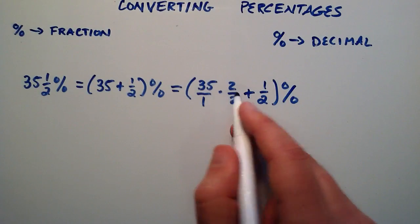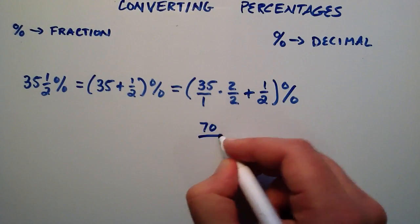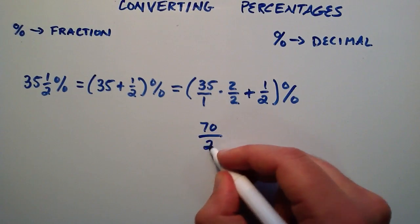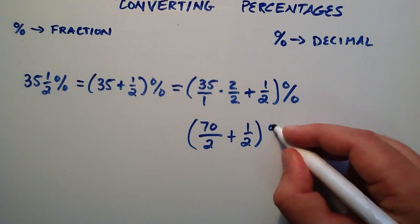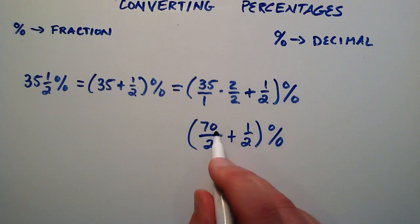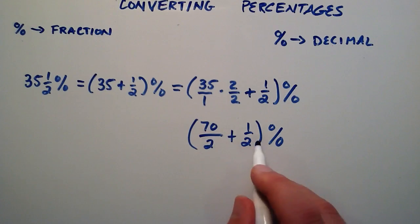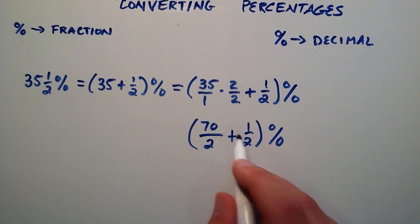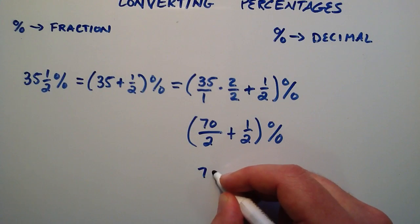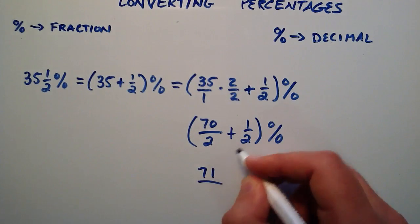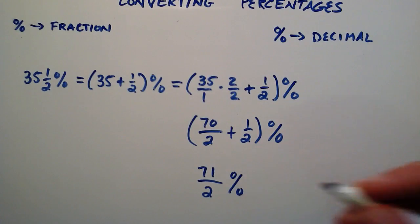35 times 2 is 70. 1 times 2 is 2. And then we're adding our second term, 1 half, putting the percent on the outside. And now we have two fractions with the same common denominator, so we simply add the numerators together. This becomes 70 plus 1, which is 71, over the common denominator of 2 percent.